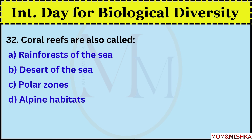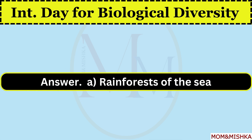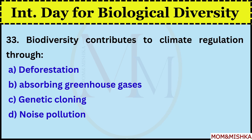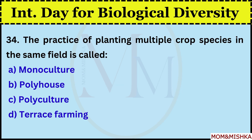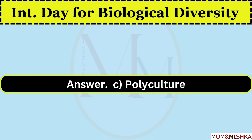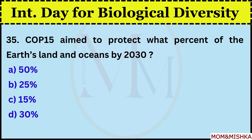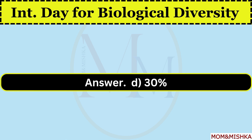Coral reefs are also called Rainforests of the Sea, option A. Biodiversity contributes to climate regulation through absorbing greenhouse gases, option B. The practice of planting multiple crop species in the same field is called Polyculture, option C. COP 15 aimed to protect 30% of the Earth's land and oceans by 2030, option D.